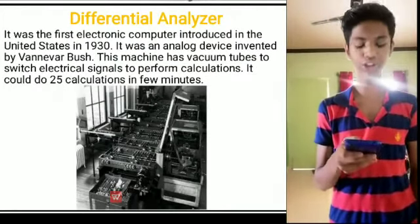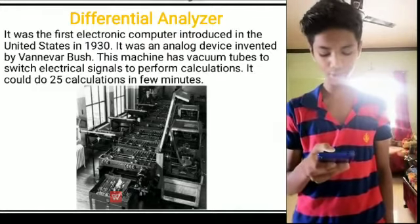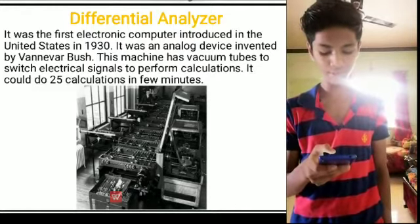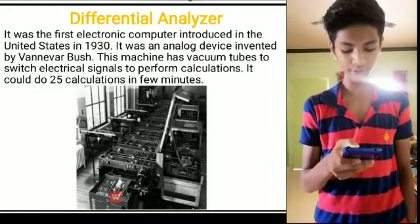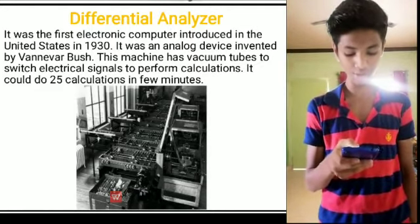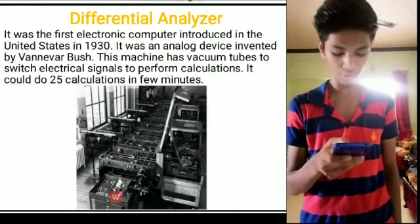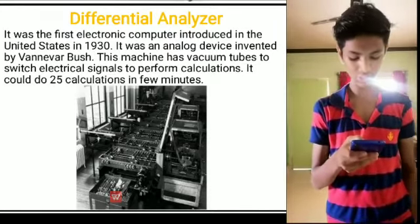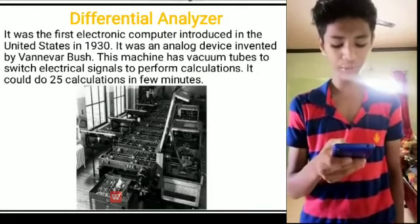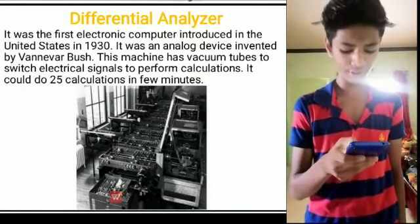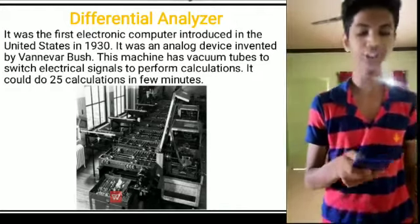8. Differential Analyzer: It was the first electronic computer introduced in the United States in 1930. It was an analog device invented by Vannevar Bush. This machine used vacuum tubes to switch electrical signals to perform calculations. It could do 25 calculations in a few minutes.